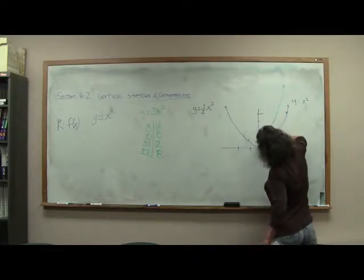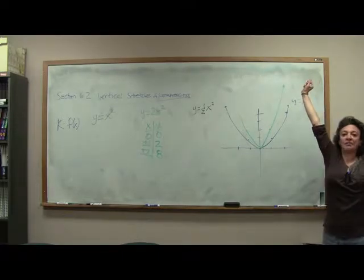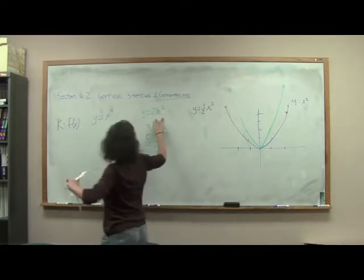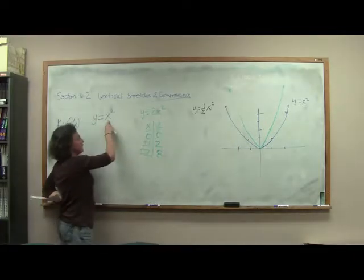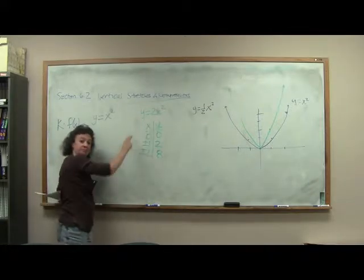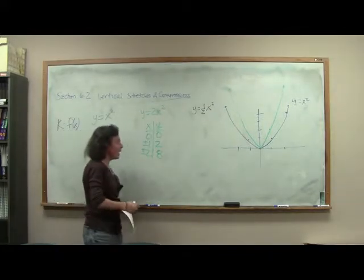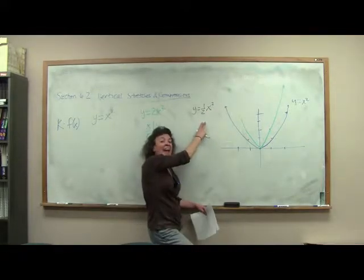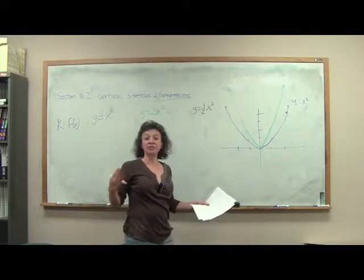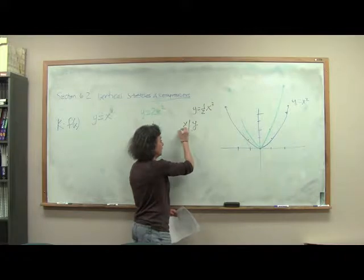So notice our graph was stretched up. Why is that? Well, look. Aren't we essentially taking each of our original function values and doubling them? Yeah. So in the back of our heads now, we can think, well, if we're going to take 1 half of it, what are we doing to each of our function values? We're dividing them by 2, so they're going to be smaller.